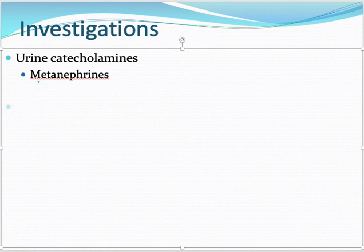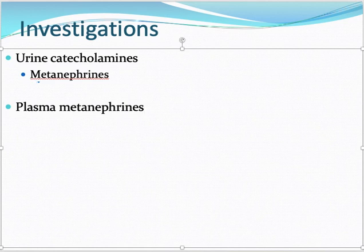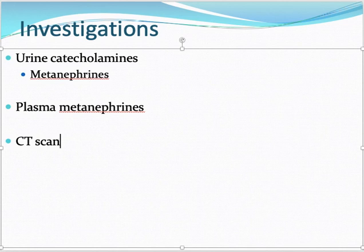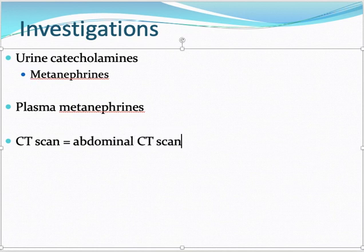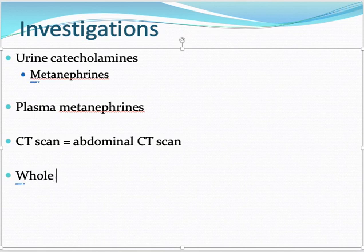We can also measure plasma metanephrines in addition to urine. The second step is to locate the tumor: we perform an abdominal CT scan first, as that is the most common location. If the tumor is not found there, we proceed to a whole-body CT scan.